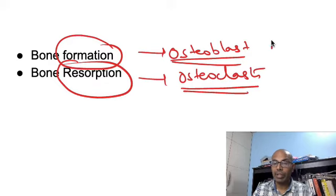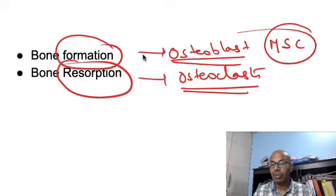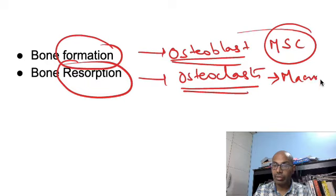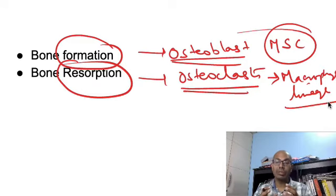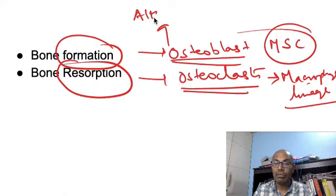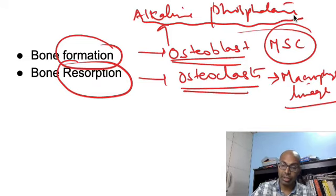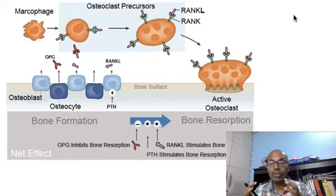Osteoblasts arise from mesenchymal stem cells — they are of mesenchymal origin — whereas osteoclasts are from the macrophage-monocyte lineage. The enzyme very specific for osteoblasts is alkaline phosphatase, which can be measured in the serum as a marker of osteoblastic activity.